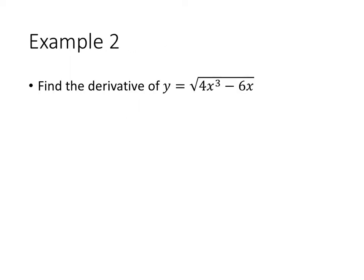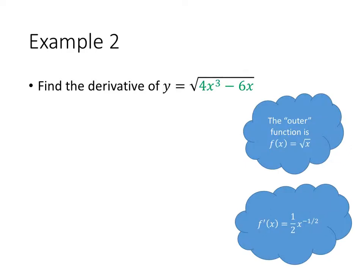Let's look at an example. The first step is that we want to identify the inside and outside functions. In this case, it's relatively straightforward to see that 4x³ - 6x is the inside function, and the outside function is the square root function.